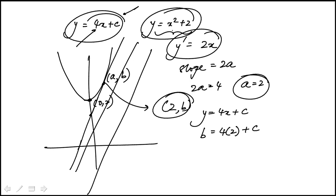But now the point also falls on the parabola, so we have another relationship, which is b = a² + 2. So these are my two relationships that I need to use to find what c is.